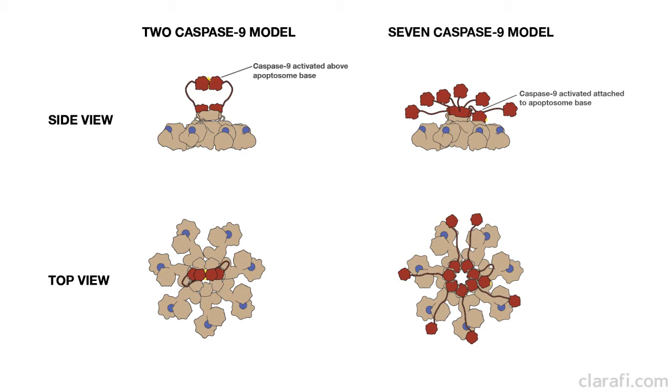To activate caspase 9, the catalytic domain must dock to the base of the apoptosome. Docking to the apoptosome causes a conformational change in the catalytic domain of caspase 9 that activates it.